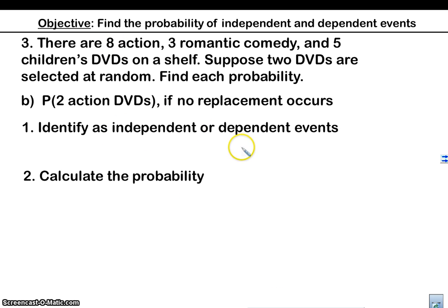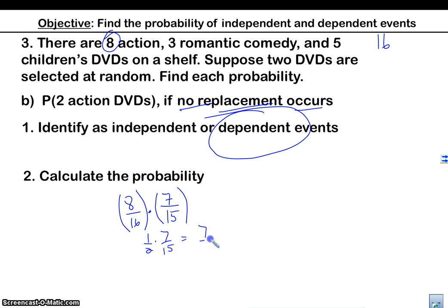Two action DVDs if no replacement occurs. So that means we're not going to replace it back. These are dependent. Still got 16, right? Now I'm going to pick one action out. So I'm going to have eight out of 16. Then I don't put it back. So I only have seven left and 15 left there. So what does that give me? Give me one-half times seven over 15, which equals seven over 30. That's the probability.